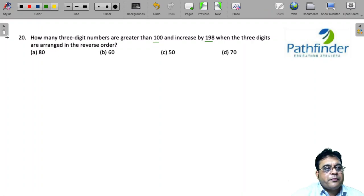CAT 2021 slot number 1, question number 20: How many three-digit numbers are greater than 100 and increase by 198 when three digits are arranged in reverse order? So we represent...